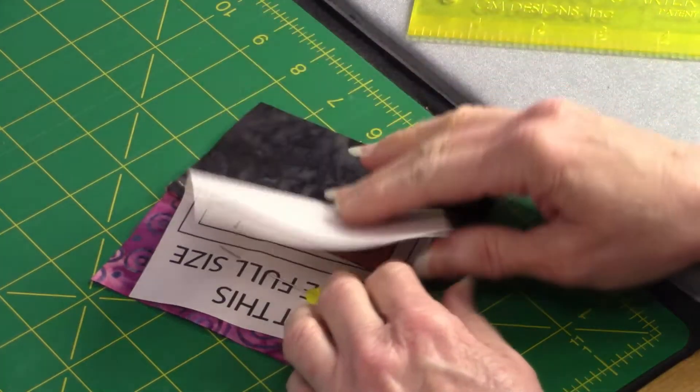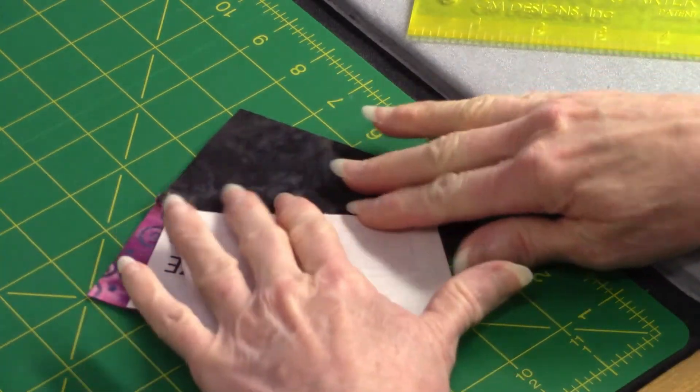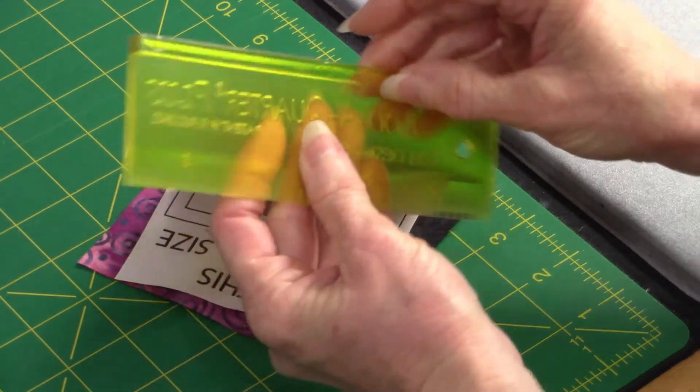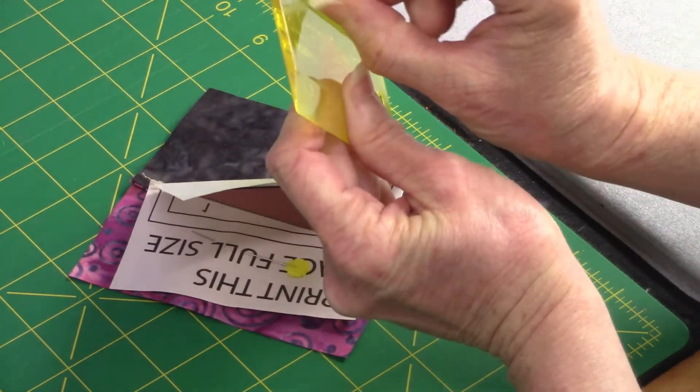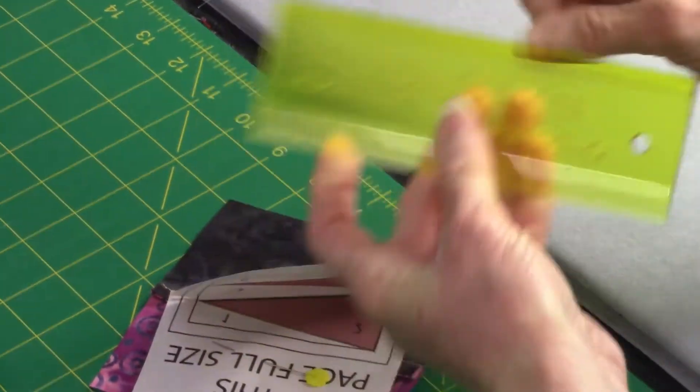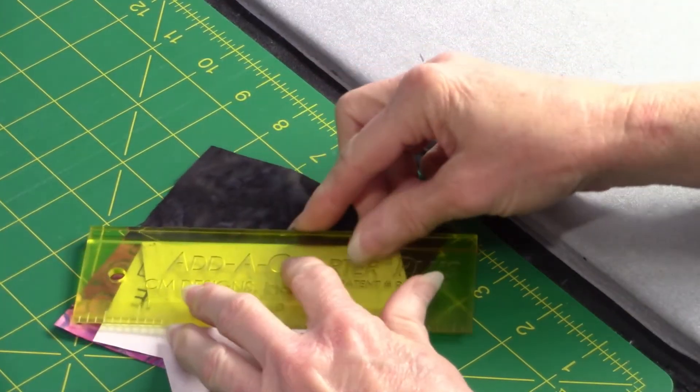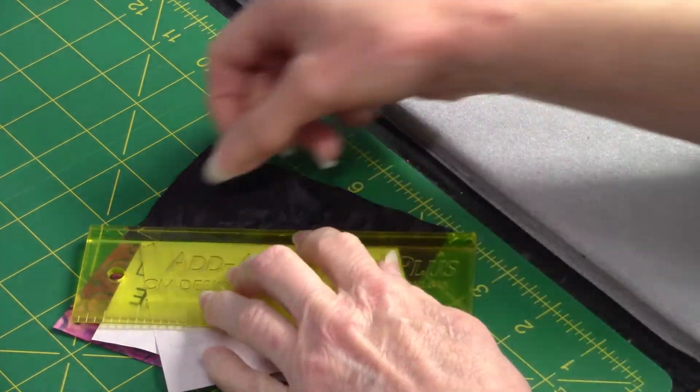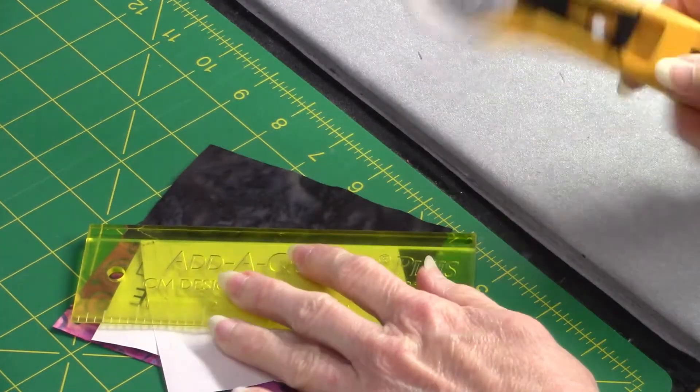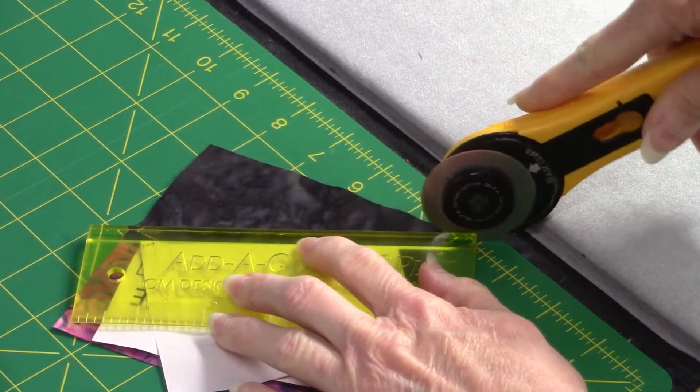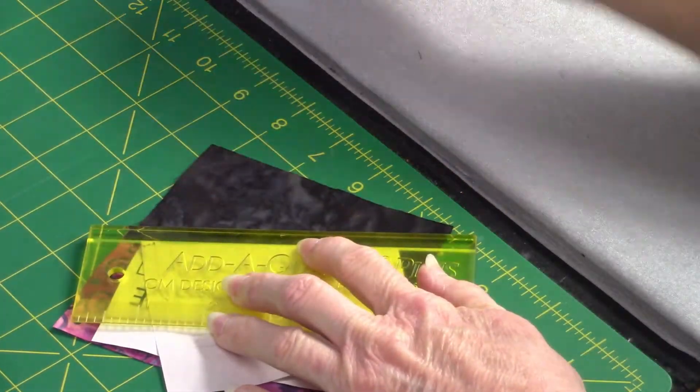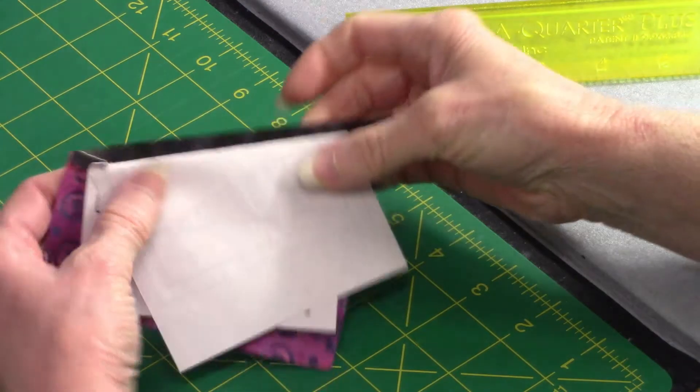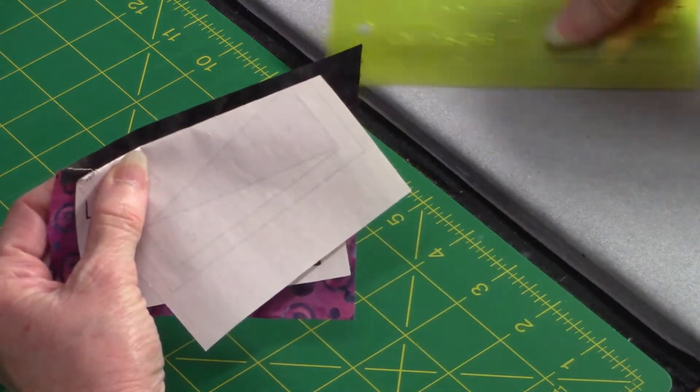Now we've folded the paper back like so. So we're going to take this ruler that has one side with a lip on it, right here, a little groove. And I'm going to take that groove and I'm going to butt it right to the fold of my paper. And when I trim it, I'm going to take my rotary cutter and trim that. It makes an exact little quarter inch seam allowance there.